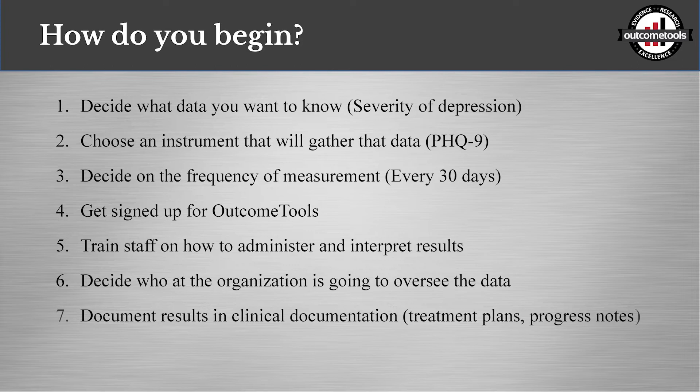In this case, we're going to choose the PHQ-9 because it measures severity of depression. After you choose a tool, you decide how often you want it delivered. Some tools have limits on how often you can deliver — for example, no more than once a month. The tool you choose will tell you how often you should deliver. Then you need to get signed up with Outcome Tools.